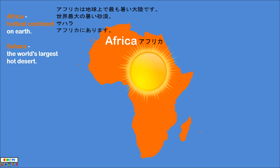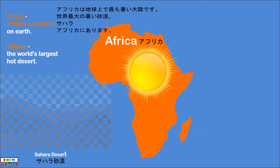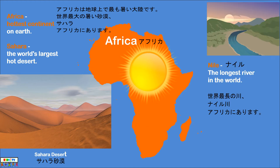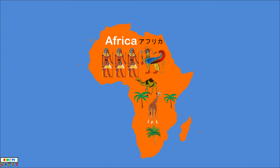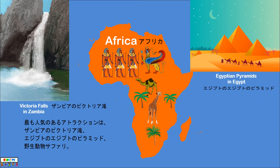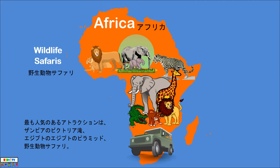Africa is the hottest continent on Earth, and the world's largest hot desert, the Sahara, is in Africa. The longest river in the world, the Nile, is also in Africa. The most popular attractions are Victoria Falls in Zambia, the ancient Egyptian pyramids in Egypt, and wildlife safaris.